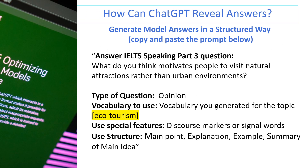Here is an easy ChatGPT prompt you can copy and paste — remember to change the topic word for new topics. Answer this IELTS Speaking Part 3 question: 'What do you think motivates people to visit natural attractions rather than urban environments?' Type of question: Opinion. Vocabulary to use: vocabulary you generated for the topic ecotourism. Use discourse markers or signal words. Use this structure: Main point, Explanation, Example, Summary of main idea.